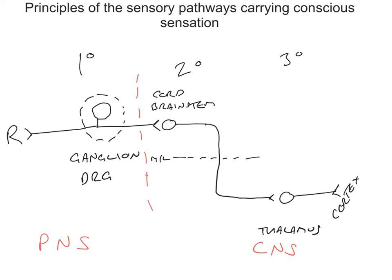Those second order neurons are typically found in the spinal cord but they're also found in the brainstem. The interesting thing about the second order neuron is it crosses the midline, going to the contralateral side, where it projects up to the thalamus. In the thalamus we find the third order neurons — otherwise known as thalamocortical neurons — and it's their role to project to the cerebral cortex, primarily the primary sensory cortex, where perception begins to occur.